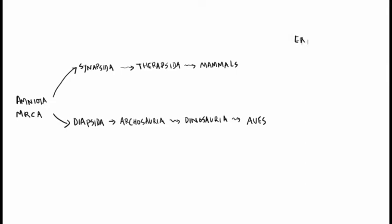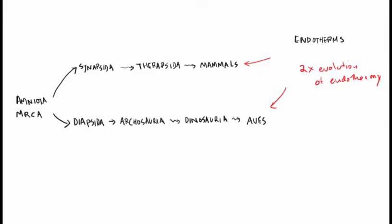When we think about endothermy, modern endotherms include two obvious groups: mammals and birds. Looking at the vertebrate tree of life, endothermy would have to have evolved twice — once along the lineage giving rise to mammals, and once along the lineage giving rise to birds. The alternative — that the amniote most recent common ancestor was an endotherm — seems highly unlikely given that most modern diapsids like crocodiles, lizards, snakes, and turtles are all ectothermic.